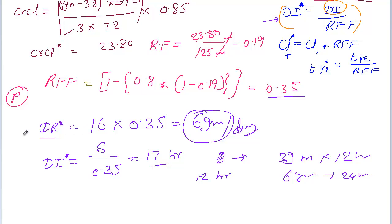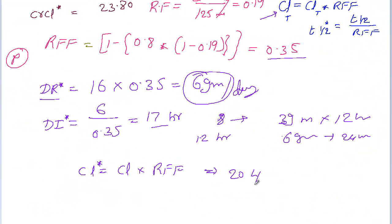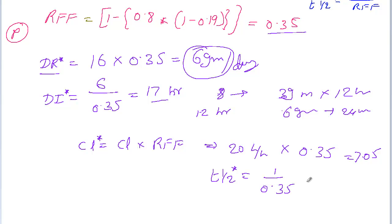Now that we've calculated the Piperacillin dose rate, we can also calculate clearance and half-life. The clearance of the renal-impaired patient equals the normal patient's clearance times the renal fudge factor: 20 liters per hour times 0.35 gives approximately 7.05 L/hr. For half-life, the normal patient's T½ of 1 hour divided by the renal fudge factor 0.35 gives a new T½ of 2.8 hours.